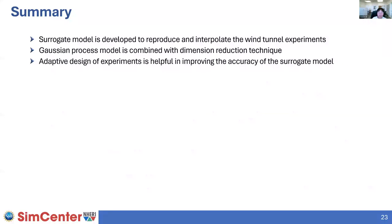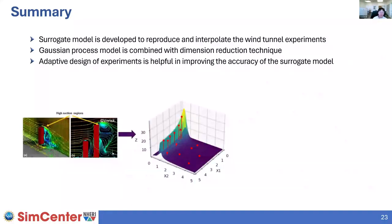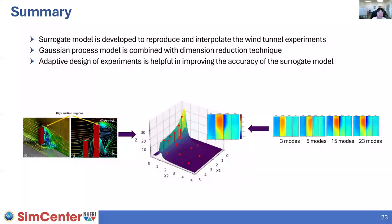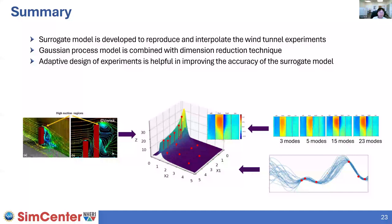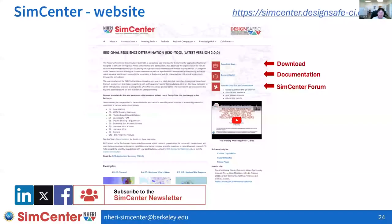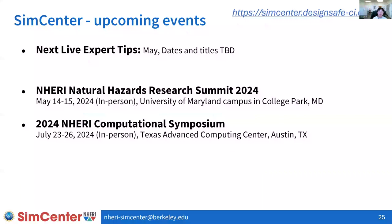As a summary: the surrogate model can reproduce wind tunnel experimental datasets, especially under wind interference effects. To achieve this, we combined a dimension reduction method to make it computationally affordable, and introduced adaptive design of experiments to improve accuracy with the same number of training samples. There will be more live expert tips coming in May, and there are some in-person SimCenter events for those interested in joining. Thank you everyone for listening.